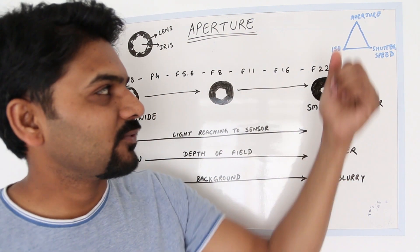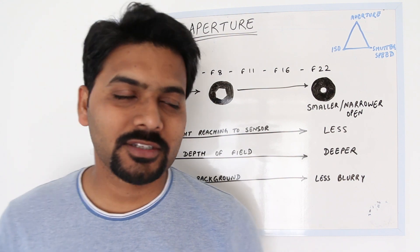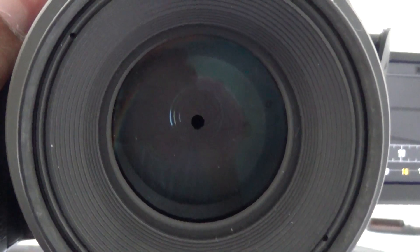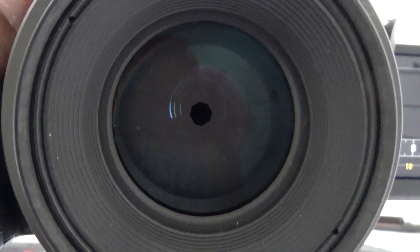The exposure triangle is made up of aperture, ISO, and shutter speed. Aperture is the iris or opening of the lens which controls the light transfer to the film or sensor of the camera.